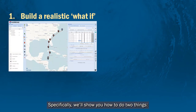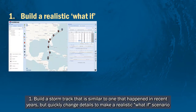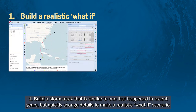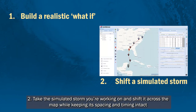We'll show you how to do two things. One, build a storm track that is similar to one that happened in recent years but quickly change some details to make a realistic what-if scenario. And two, take the simulated storm you're working on and shift it across the map while keeping its spacing and timing intact.